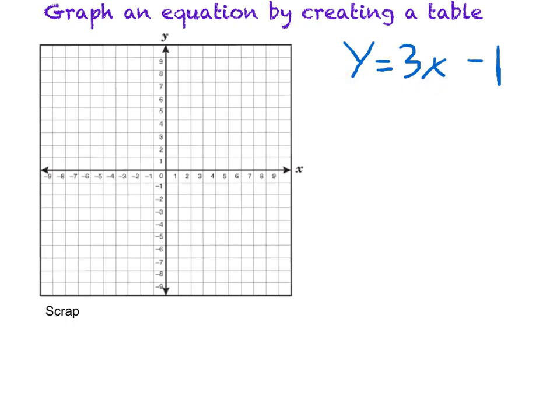A solution is going to be an ordered pair, in other words an x and a y value, which make this true. So one of the things that we like to do is to graph on a coordinate plane, an xy plane, so that we can see all the different solutions to an equation like this and what they look like.